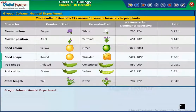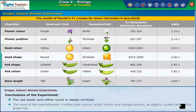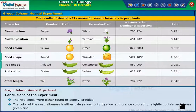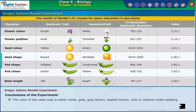Conclusions of the experiment: The ripe seeds were either round or deeply wrinkled. The color of the seed albumen is either pale yellow, bright yellow and orange colored, or slightly contains an intense green tint. The color of the seed coat is either white, gray, or gray-brown.